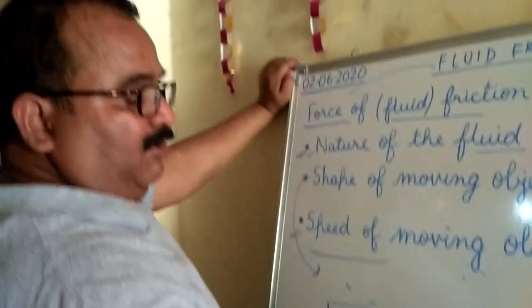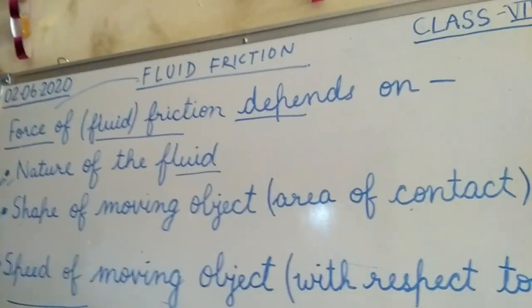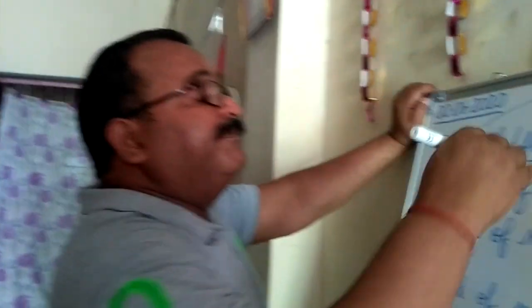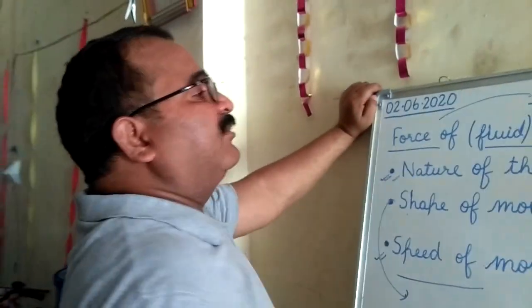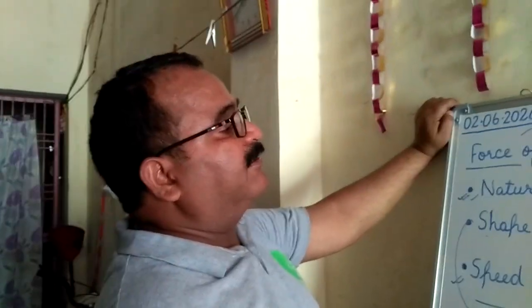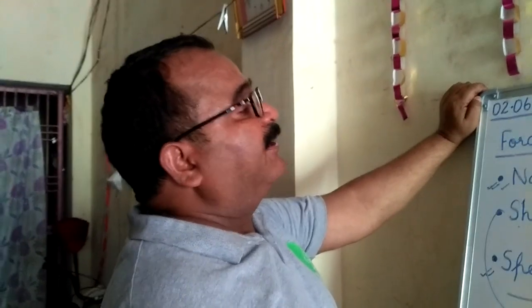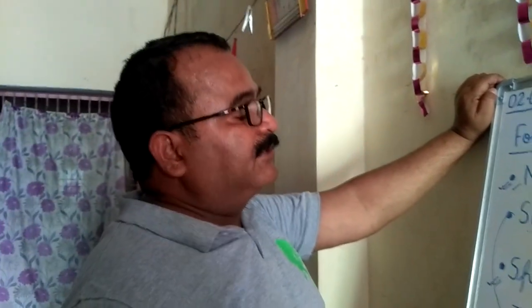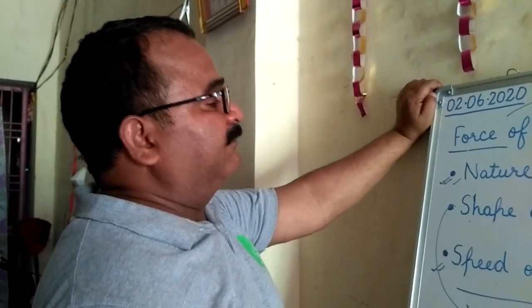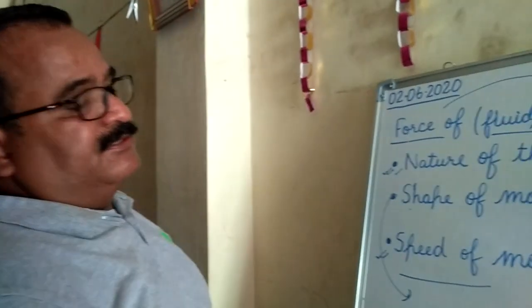This is all about fluid friction. In an airplane or a boat, this special streamlined shape is specially designed because it gives less fluid friction. That's all for this particular chapter. Try to solve all the questions related to it. If you have any difficulty, send your questions on WhatsApp and we will remove that difficulty. Thank you.